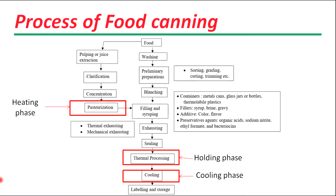During the cooling phase, a cooling medium is introduced such as air or water, and the temperature of the product is decreased. Canned foods are cooled and then handled at room temperature, maintaining container integrity and preventing recontamination of the product.